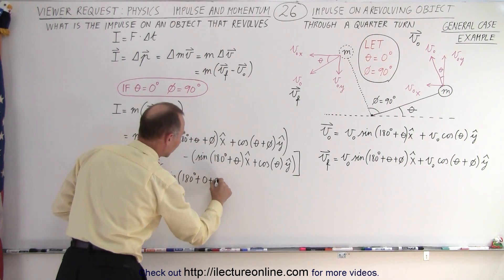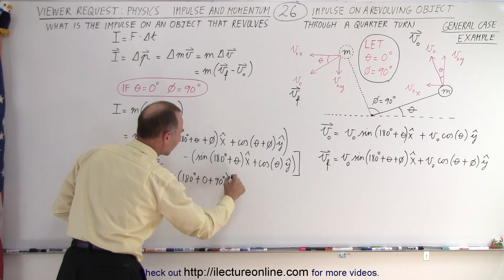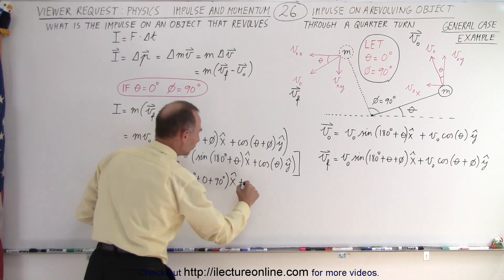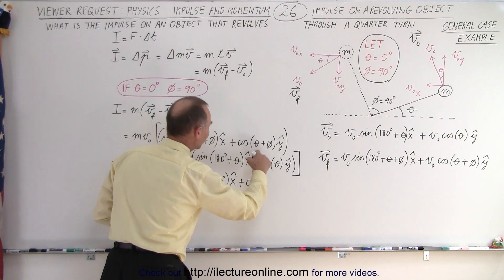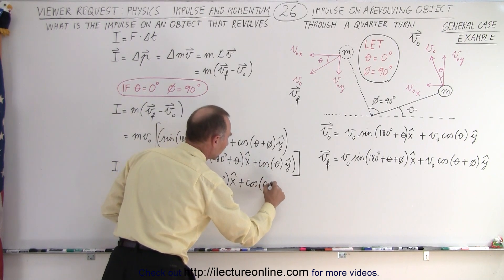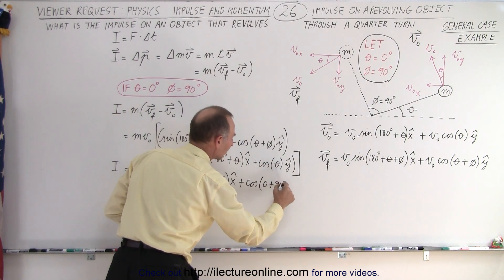which is 90 degrees in the x direction, plus the cosine of theta, which is 0 degrees, plus phi, which is 90 degrees.